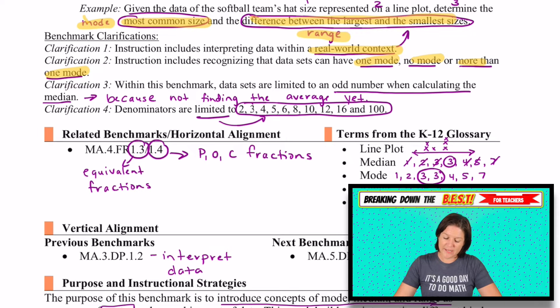And if one number in particular has more than the rest, that would be one mode. So we do have video lessons here that showcase examples of all those. This says within this benchmark, data sets are limited to an odd number when calculating the median. So when we have a data set, we need to make sure that our data set contains an odd amount.